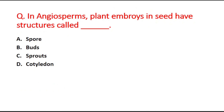Next question: in angiosperms, a plant embryo in a seed has structures called blank. Option A is spore, option B is buds, option C is sprouts, and option D is cotyledon. The right answer is option D, cotyledon.